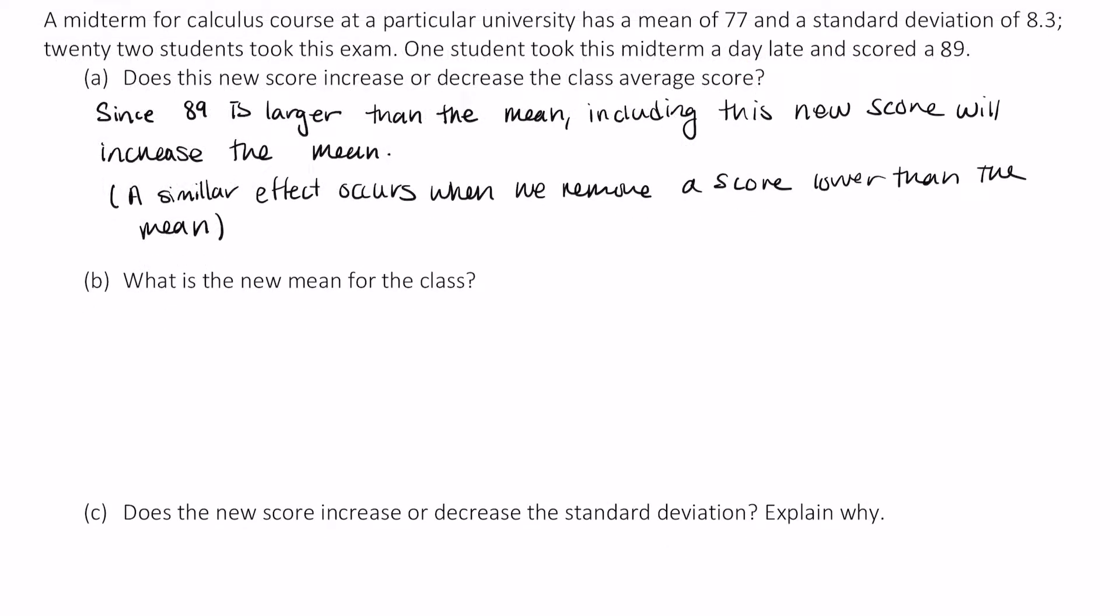Now for part b, what is the new mean for this class? To figure that out, let's think of how we compute a mean. We're going to sum up all the scores. So that is the sum of 22 scores. We divide that by 22, which is the number of scores we had to sum together. And then that gave us the mean of 77.